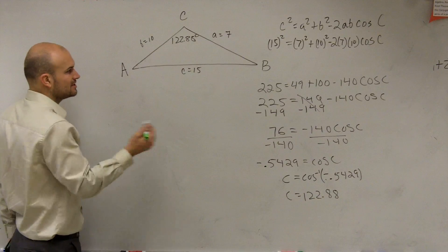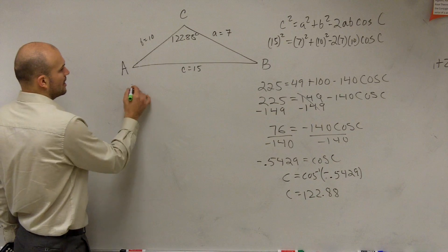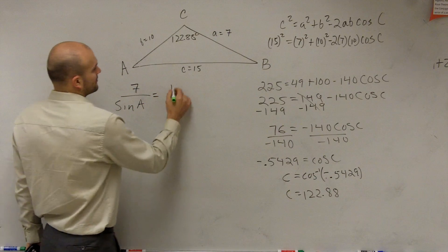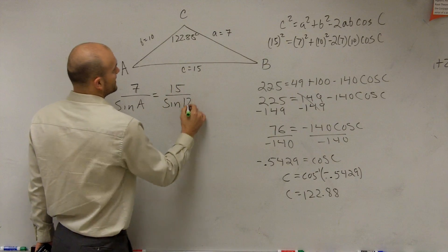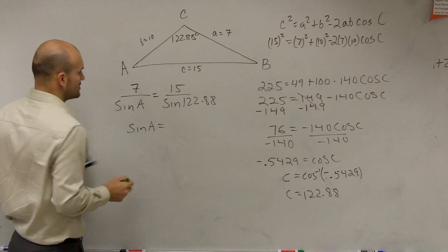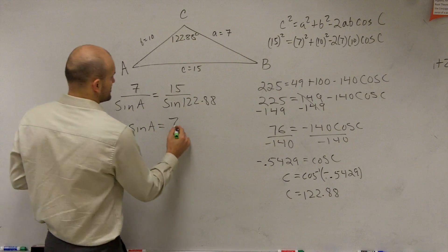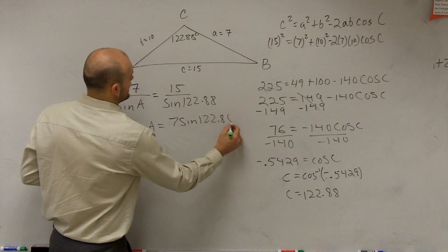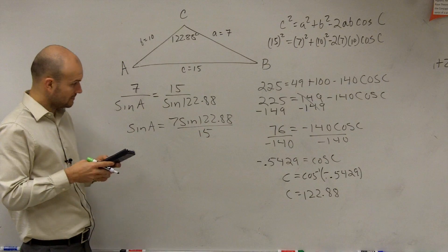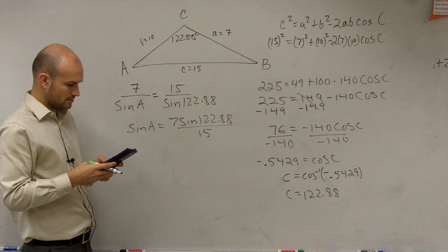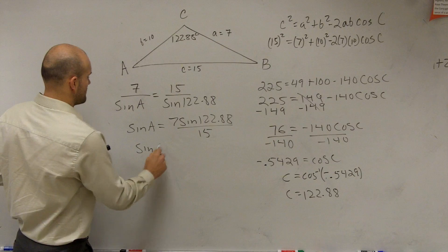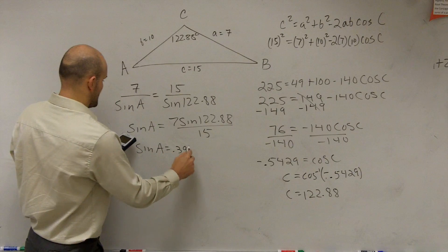So now, to find angle A or B, we can just use the law of sines. I'll do A. So 7 over sine of A equals 15 over the sine of 122.88. So by solving for sine of A, sine of A equals, we could do 7 times sine of 122.88 divided by 15. So I get sine of A equals 0.3919.